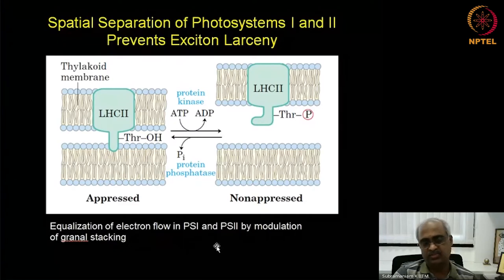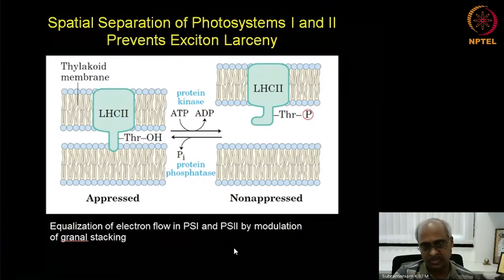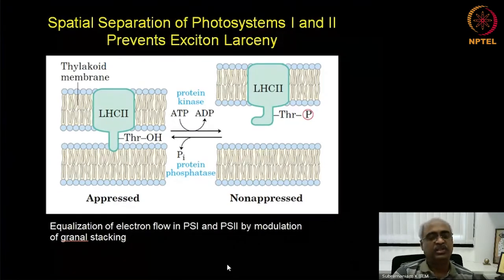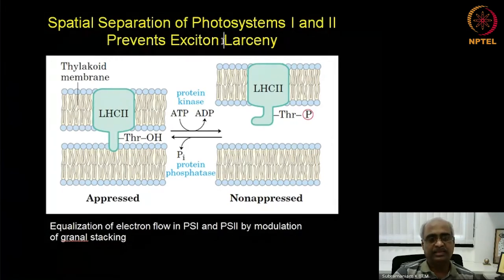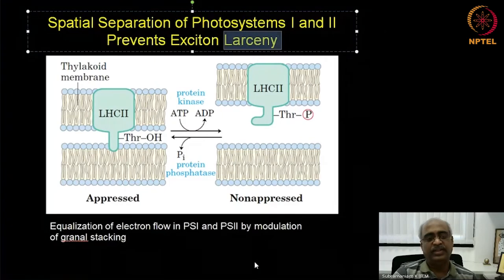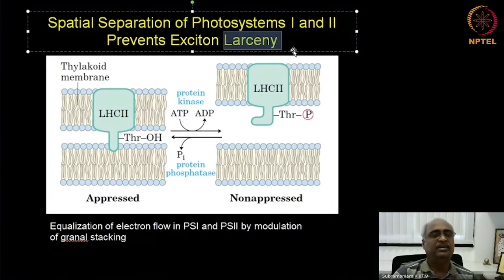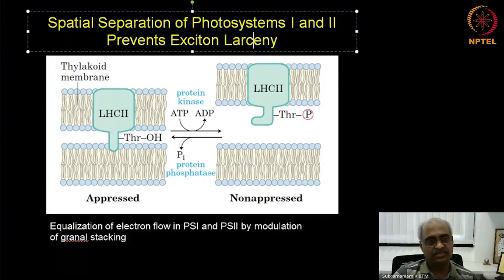Whatever little light LHC2 gets is ultimately used to excite photosystem 2. This way, depending on light intensity, light harvesting is regulated such that you have balanced, optimum oxidation and reduction of ubiquinone to ubiquinol and back — that is how equalization of electron flow in photosystem 1 and photosystem 2 is modulated by light itself. Bright light activates the kinase and dim light activates the phosphatase. This stealing of excitation energy is what they call 'larceny' — photosystem 1 stealing excitation from photosystem 2.